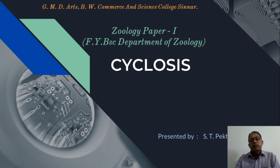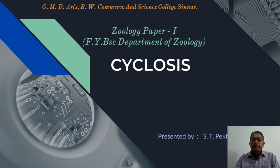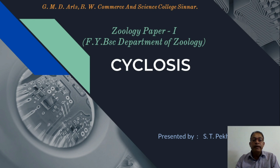In Paramecium, the locomotory organelles are cilia. In the first lecture via Google Meet, we studied all the details about Paramecium — external features, its class, order, genus and species. The external features show that the animal body looks like the sole of a slipper, so it is known as the slipper animal. After classification and external features, we study the process of nutrition in Paramecium, also known as the process of cyclosis.